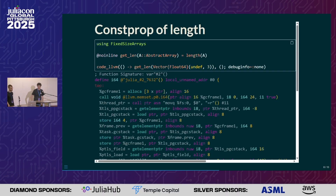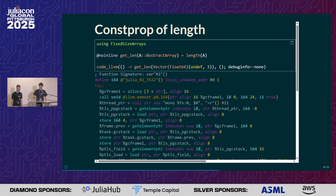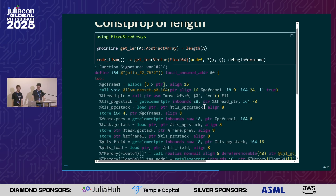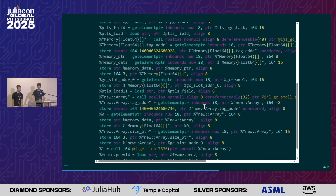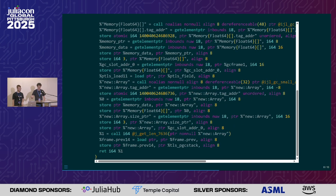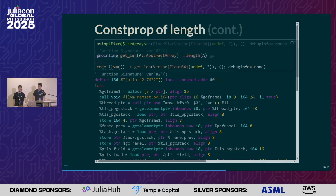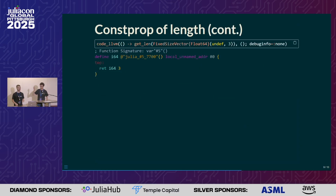Another case is constant propagation on length. So we take the length of an array, and then we call a function which creates an array and asks for this length. If you use vector, the compiler has to first create and allocate the memory, and then does lots of work just to get to the size which you should know already. Instead, when you use fixed-sized array, it's just three.